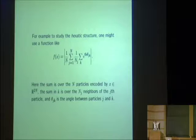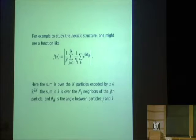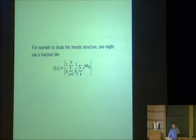We could record the position of N disks in a region in the plane with one point in R to the 2N. So the space of all allowable configurations is endowed with a natural topology as a subset of R to 2N and also with a natural measure.